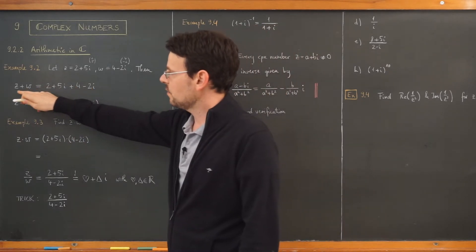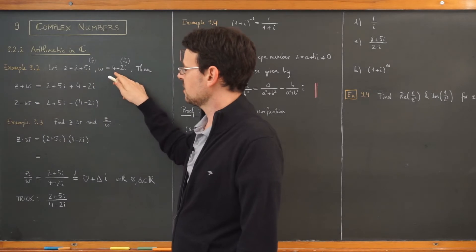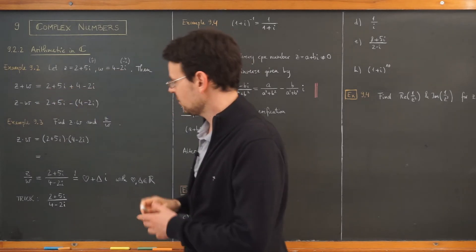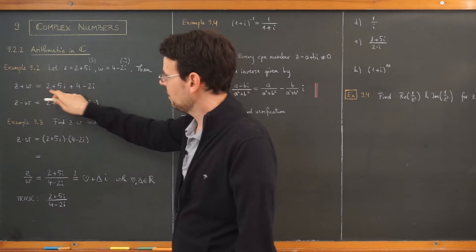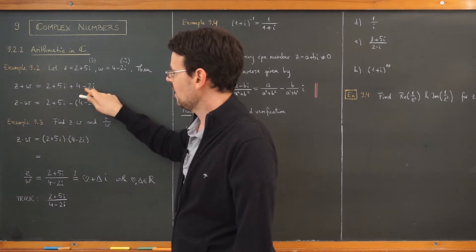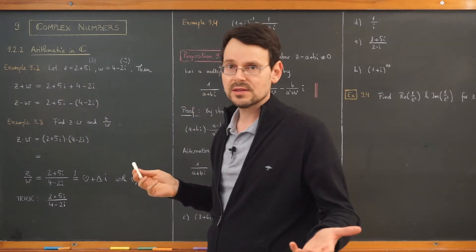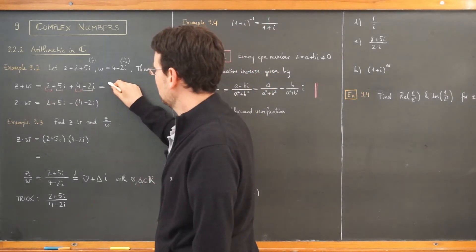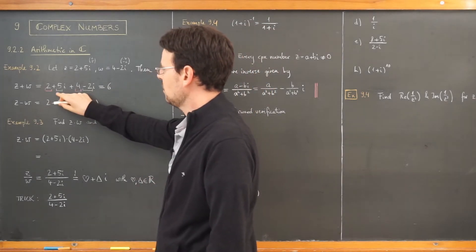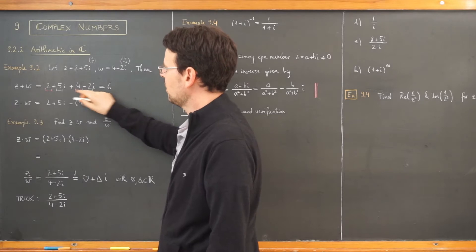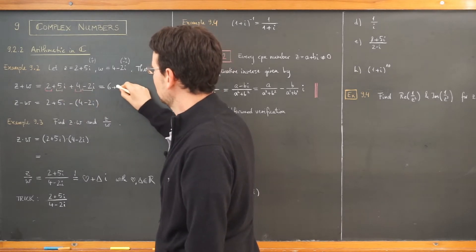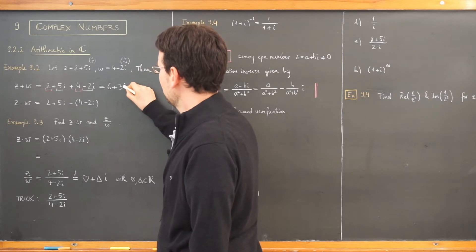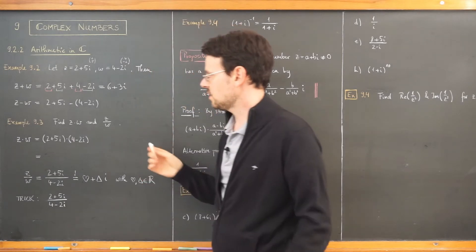The sum of these two complex numbers is very easy to obtain, because you simply have to add the real parts and the imaginary parts. And that's all. Adding the real parts, you get 6. Adding the imaginary parts, 5 minus 2, you get 3i. And this is it — that's the sum.